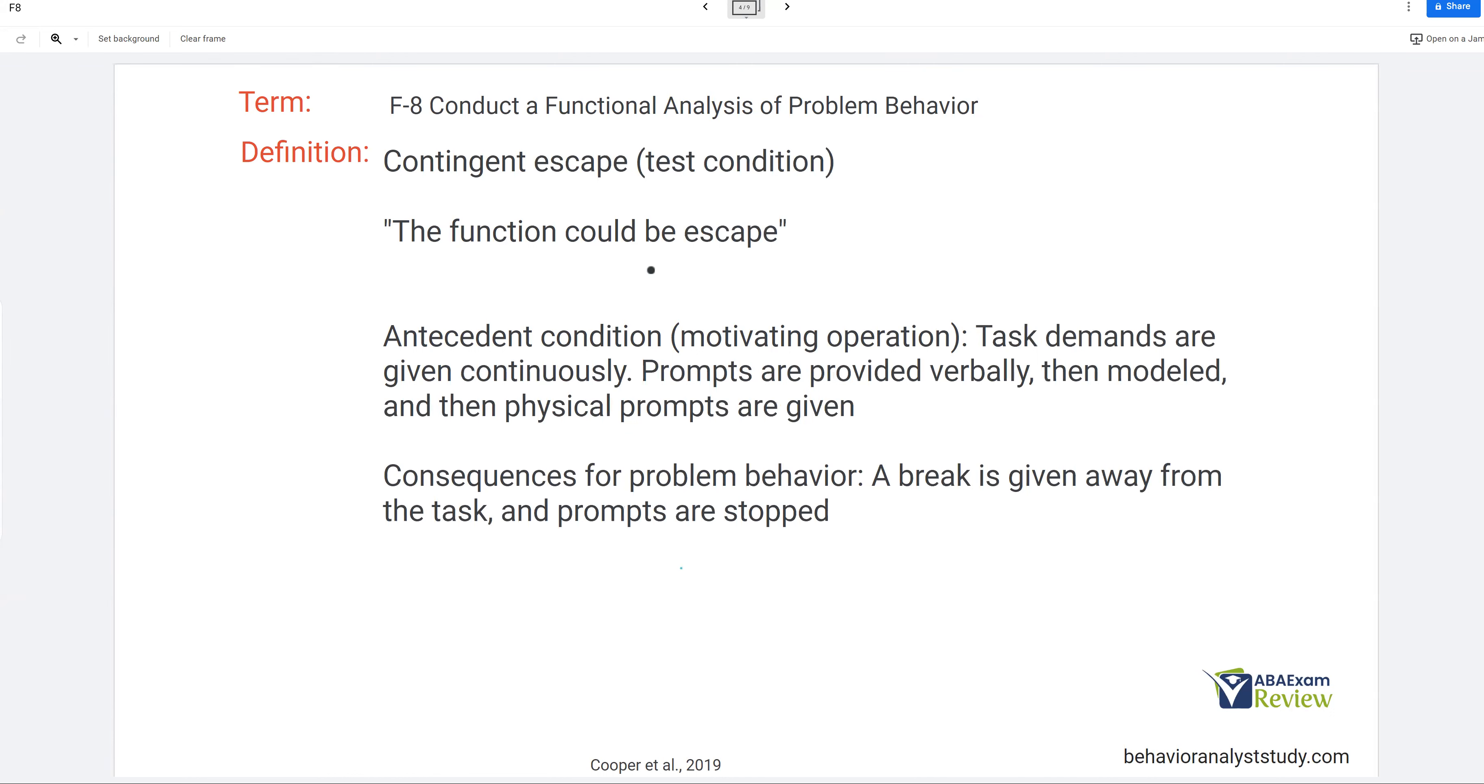Along the same line, let's say we think it's escape. So our antecedent condition, you give task demands, and then you prompt the client through first verbally, then you model, then you physically prompt. So you're trying to get the learner to engage in the task. So you can start to see a pattern here. If we think the function is escape, we're going to create a motivating operation where escape becomes more valuable, how do we do that? Through task demands. What is the consequence? Well, you might have guessed. A break is given away from the task and prompts are stopped. They want to escape. We let them escape. Again, counterintuitive to how we actually treat behavior, but you're not treating behavior here. You're trying to determine the function. In order to do that, we need to give the behavior what it wants.